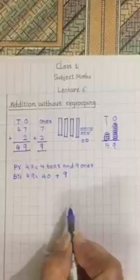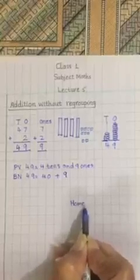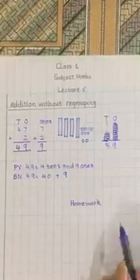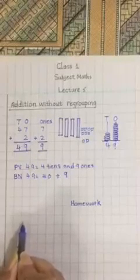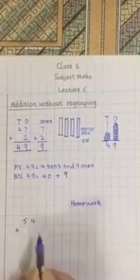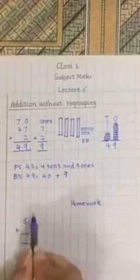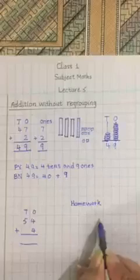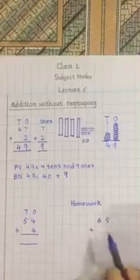This is your homework. Note the sum and do them. First sum 54 plus 4. Second sum 65 plus 4.